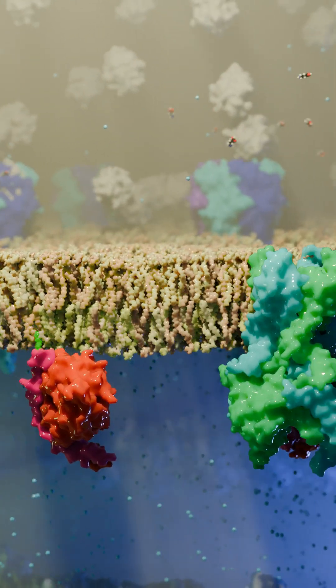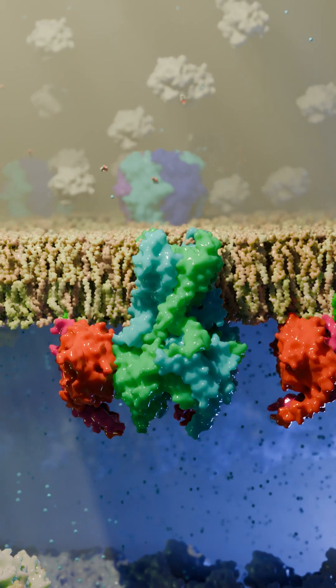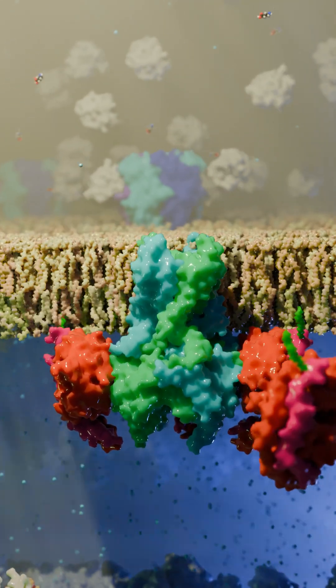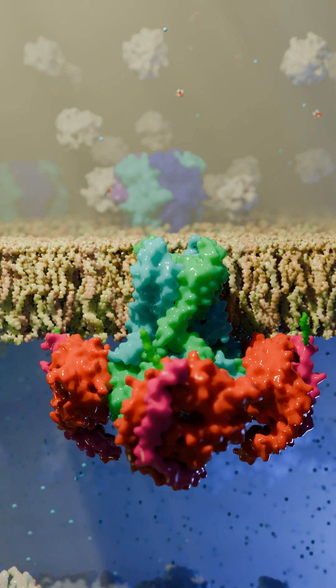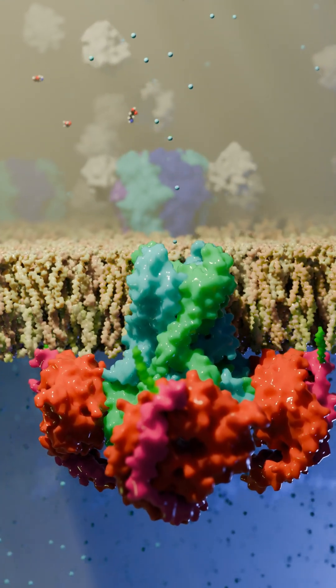G-beta-gamma can then diffuse along the membrane and bind the potassium channel GIRK. GIRK is a tetramer and has four binding sites for G-beta-gamma. By binding, the G-beta-gamma facilitates the opening of GIRK.